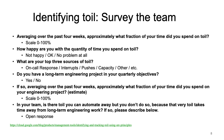One very good way of identifying toil is to survey your team. A few questions you can ask: Averaging over the past four weeks, approximately what fraction of your time did you spend on toil? How happy are you with the quantity of time you spent on toil? What are your top three sources of toil? Do you have a long-term engineering project in your quarterly objectives? You identify the right questions so that your team can help you identify the toil.